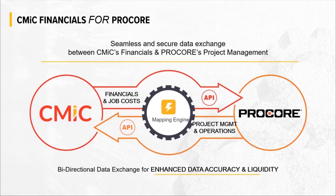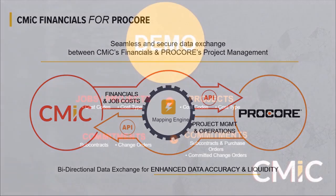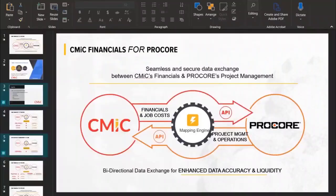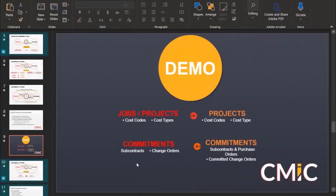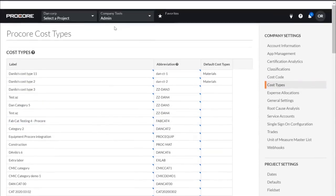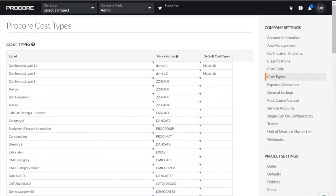We're going to take a look and see how cost codes and cost types are synchronized between CMIC and Procore. We'll take a look at vendors, and also we're going to take a look at commitments. I'm going to break out of the PowerPoint slide and jump into the product.